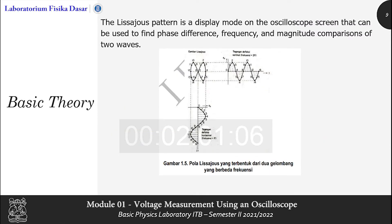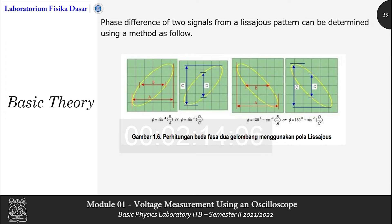Next is Lissajous pattern. The Lissajous pattern is a display mode on the oscilloscope screen that can be used to find phase difference, frequency and magnitude comparisons of the waves. Phase difference of two signals from a Lissajous pattern can be determined using a method as follow.